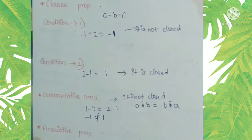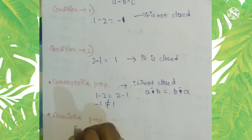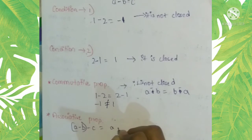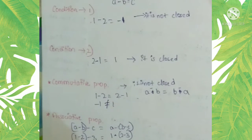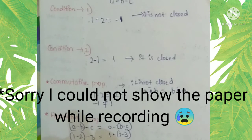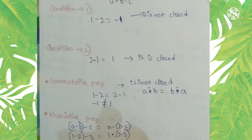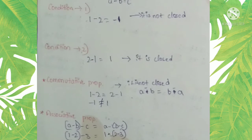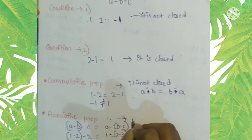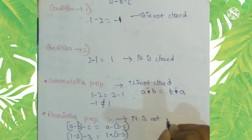For associative property, we check: (a minus b) minus c equals a minus (b minus c). Taking one, two, and three: (one minus two) minus three gives minus one minus three, which is minus four. On the other side, one minus (two minus three) gives one minus minus one, which is minus four. Both sides are equal, but these results are integers, not whole numbers. So associative property is not closed under subtraction for whole numbers.